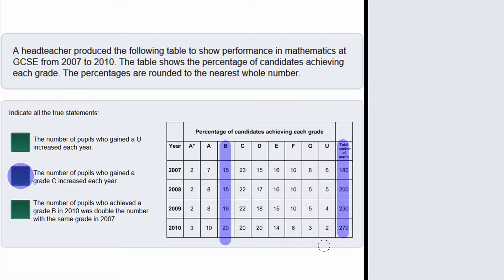In 2007 we had that 15% of the 180 pupils got a grade B, and 0.15 multiplied by 180 gives us 27. So we know there were 27 people who got a grade B in 2007. Let's do the same for 2010.